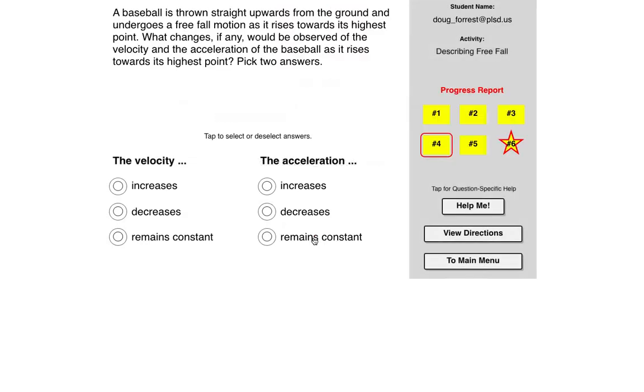Now I'm not going to do the next question, but they change a little bit. So when they say velocity here, I think they mean speed because velocity has a direction. So that's something that you need to think about when they're talking about that. So actually, let's go ahead and do this one, I guess. Baseball is thrown upwards, undergoes free fall motion as it rises towards its highest point.